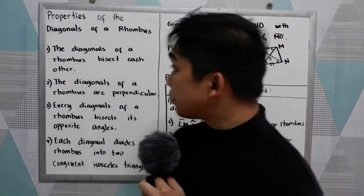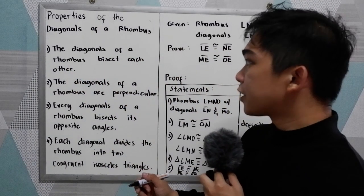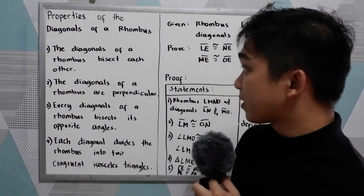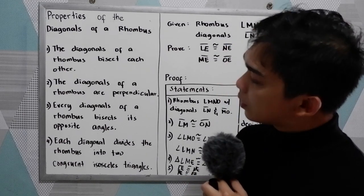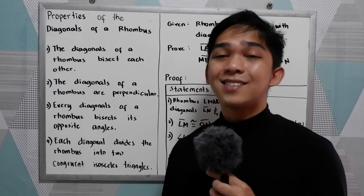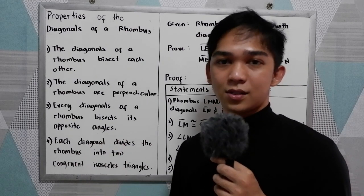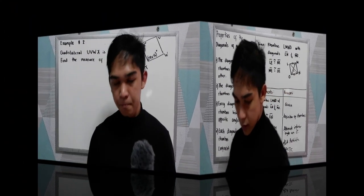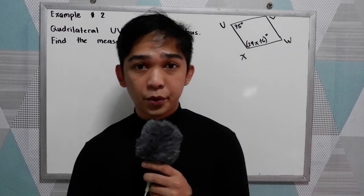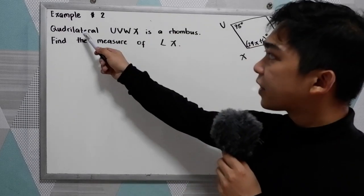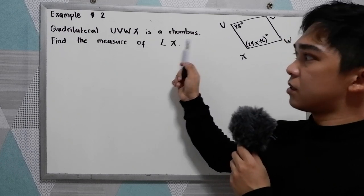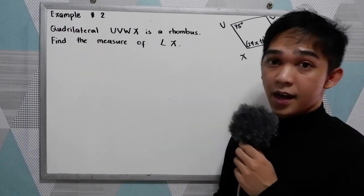So that is how to prove our first property: the diagonals of a rhombus bisect each other. Now let's apply the remaining properties as our examples. Let's have example number two.